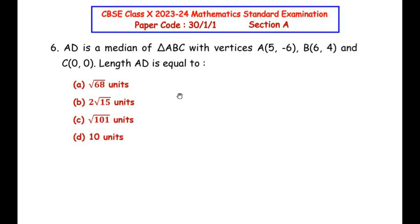The sixth question is from the coordinate geometry chapter. AD is a median of triangle ABC with vertices A(5, -6), B(6, 4), and C(0, 0). The length AD is equal to — and four options are given from which we need to choose the correct one.